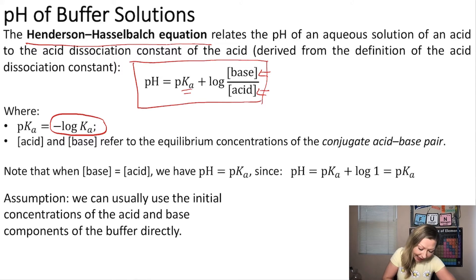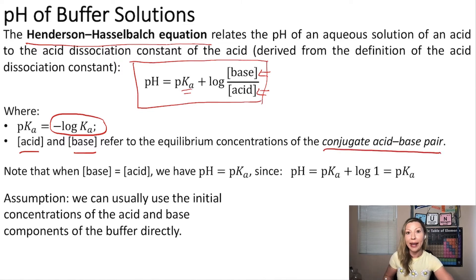And the acid and base concentrations refer to the equilibrium concentrations of the conjugate acid-base pair. Now, interestingly, when the acid concentration equals the base concentration, then the pH will simply equal the pKa because the log of 1 equals 0.